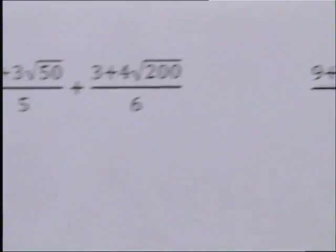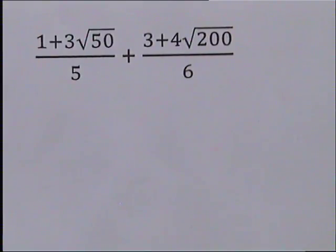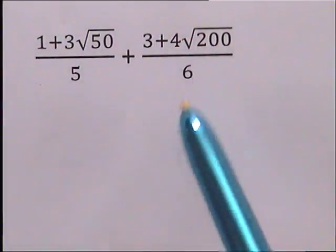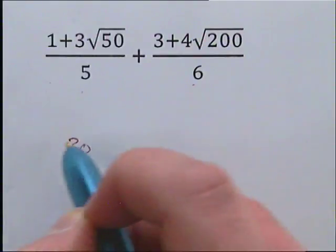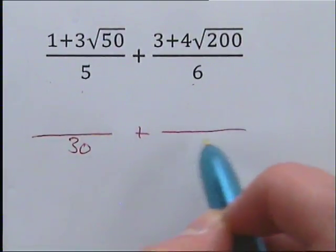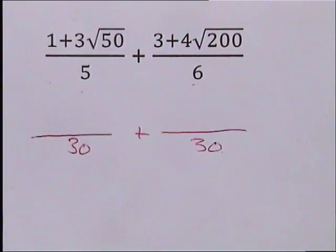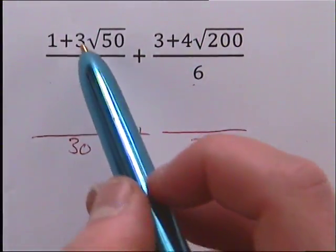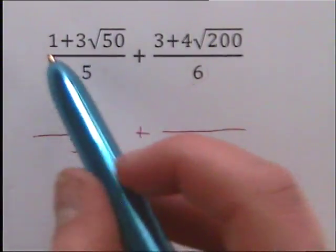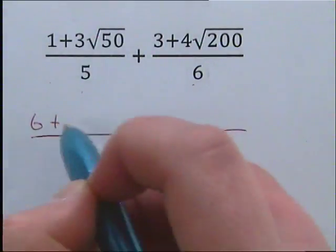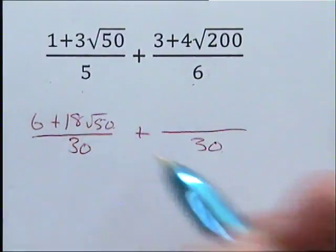Question 5 requires us to do a little bit more work now — it hasn't given us our thirds as the same number, so we're going to have to do a little bit of work to make that happen. But to begin with, we're going to treat it exactly the same as the preceding questions. We need to make our denominators the same, so we're going to be all over 30, plus all over 30. We need to times the whole top row by 6, and the whole of this top row by 5. So 1 times 6 is 6. 3 times 6 is 18, and we've still got our root 15.